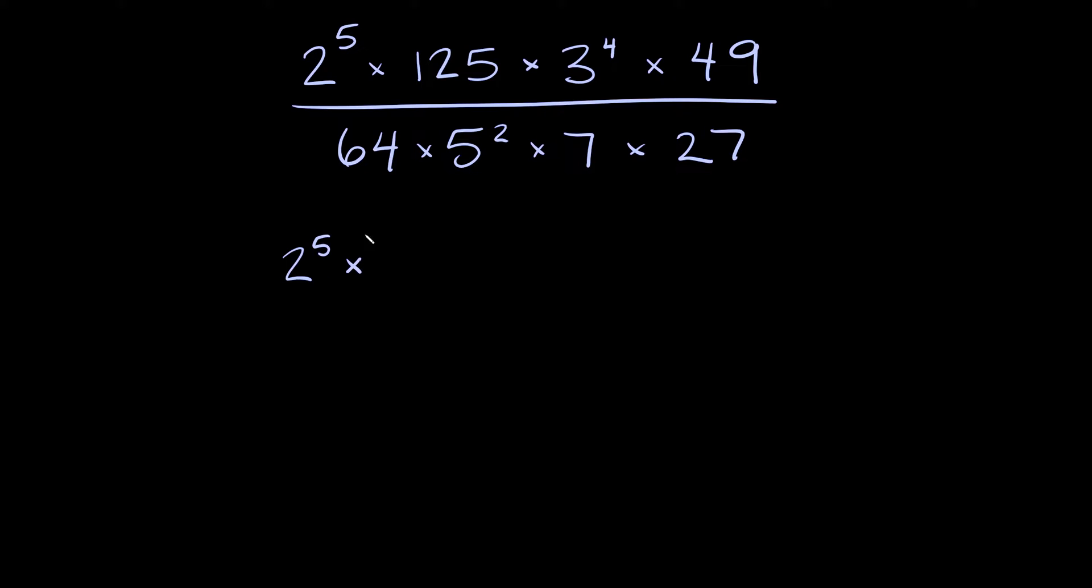We have 2 to the 5th times 125. How can we rewrite this as a number with an exponent? Well 125 is the same thing as 5 to the third power and that's gonna be convenient because as you can see we have a 5 to the second power on the bottom. We're gonna be able to cancel some stuff out there.